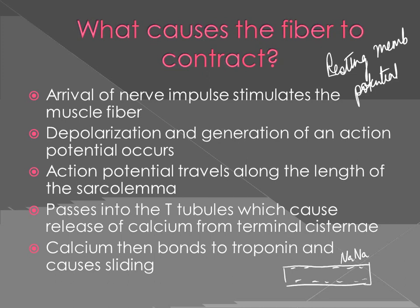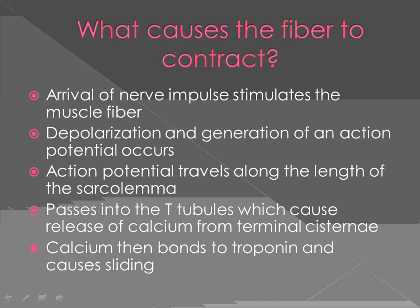When the nerve impulse arrives, it disturbs that equilibrium — a disturbance known as depolarization. When the sarcolemma gets depolarized, it generates an action potential. The nerve impulse continues along the length of the sarcolemma and, because the sarcolemma has T-tubules, it will go and stimulate the T-tubules as well. Those T-tubules then cause calcium to be released from the terminal cisternae.